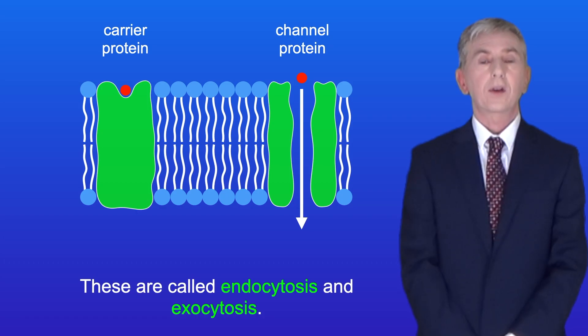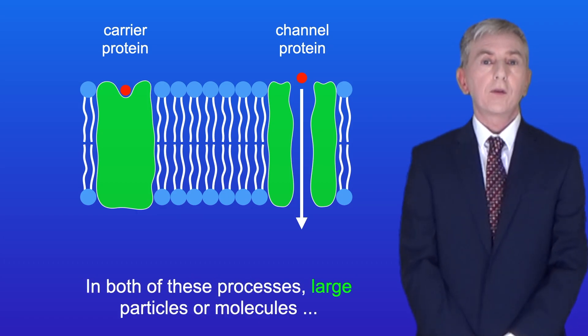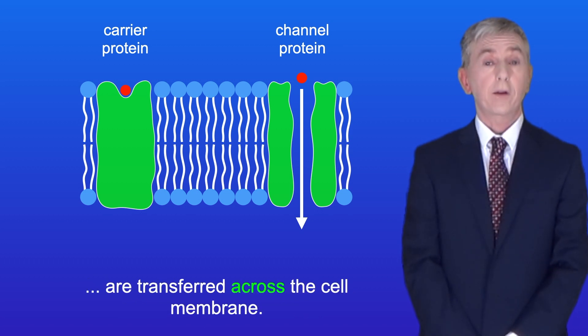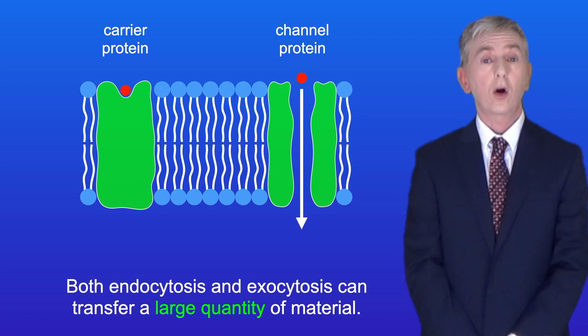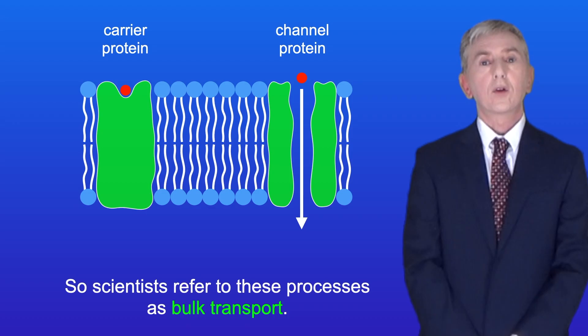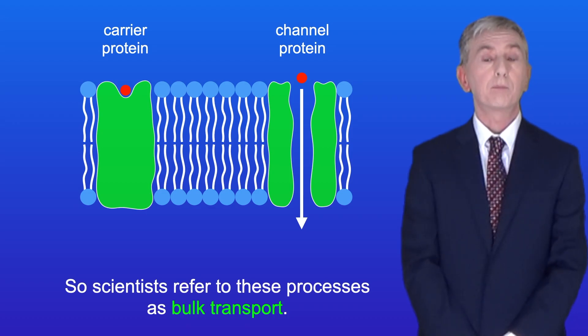These are called endocytosis and exocytosis. In both of these processes, large particles or molecules are transferred across the cell membrane. Both endocytosis and exocytosis can transfer a large quantity of material, so scientists refer to these processes as bulk transport.